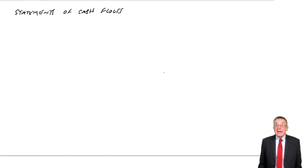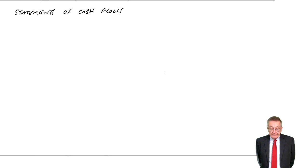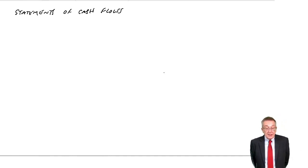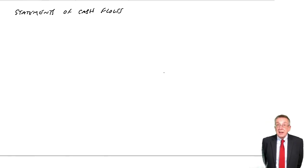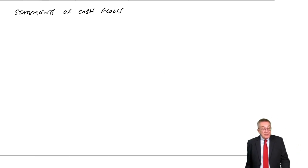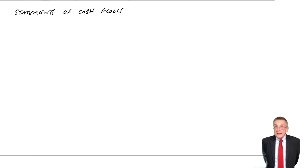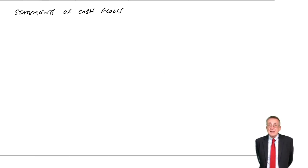If you turn to the third page, there's example one: Blair Limited. We're given the statements of financial position for two years — December 2008 and the previous year, 2007. Look at the cash balance. Last year the cash was £64,000; this year it's only £45,000 — it's fallen by £19,000.